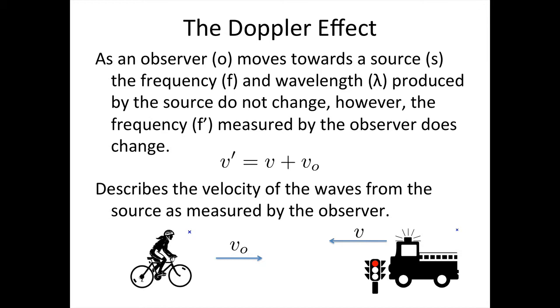This is the same as for Sally, who saw the waves go faster as she was travelling towards them. So this equation describes the velocity of the waves from the source as measured by the observer on the bike.